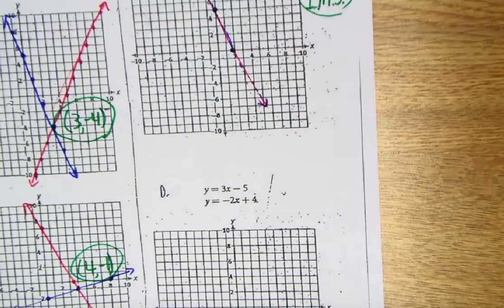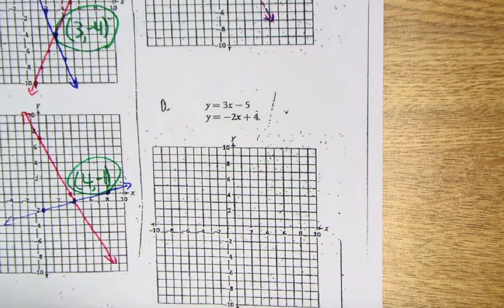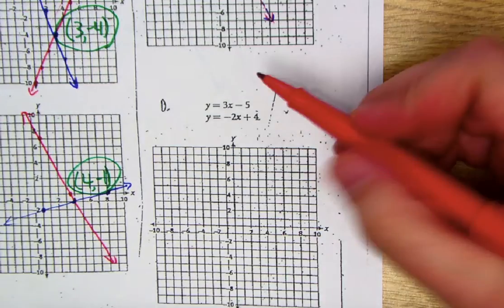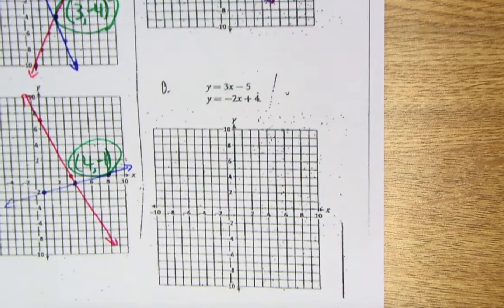All right. Last one here. Part D. Y equals 3x minus 5 and y equals negative 2x plus 4, both of which are slope intercept form.